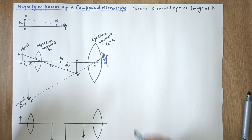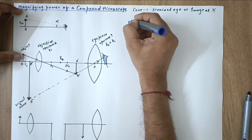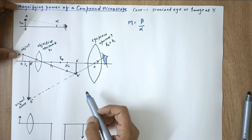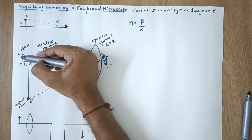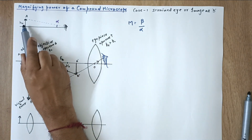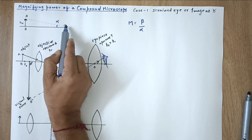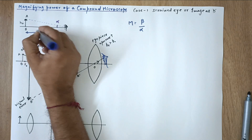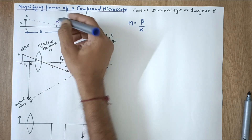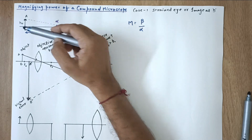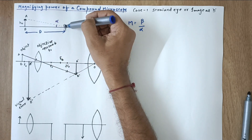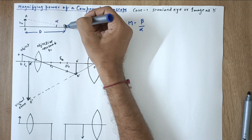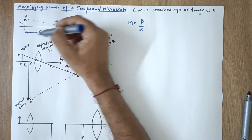Magnifying power M is the ratio of beta to alpha. Alpha is the angle made by the same small object when placed directly in front of the eye at the least distance of distinct vision D, with no lens present. So the head of the object makes angle alpha at the eye, provided the distance is D.